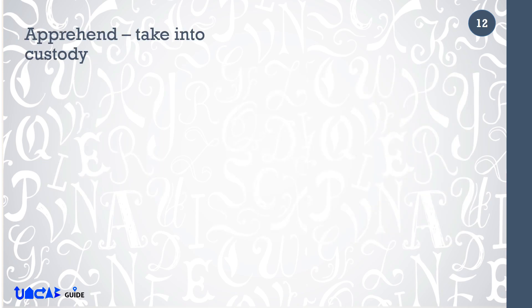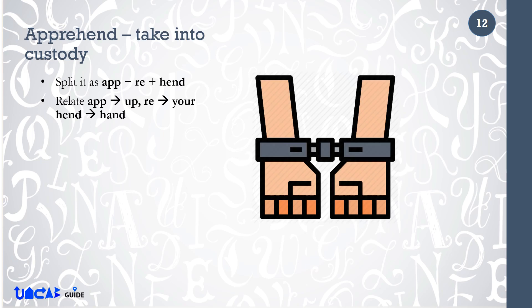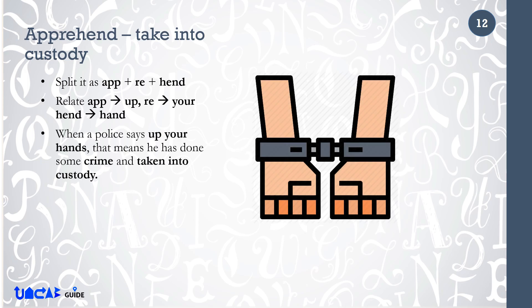Apprehend means take into custody. Split it as App plus Re plus Hand. Relate App to Up, Re to Your and Hand to Hand. When a police says up your hands, that means the person has done some crime and is taken into custody. So, apprehend means take into custody.